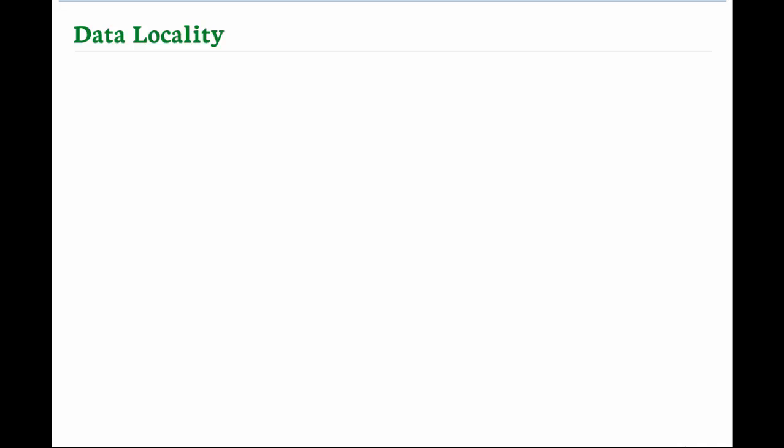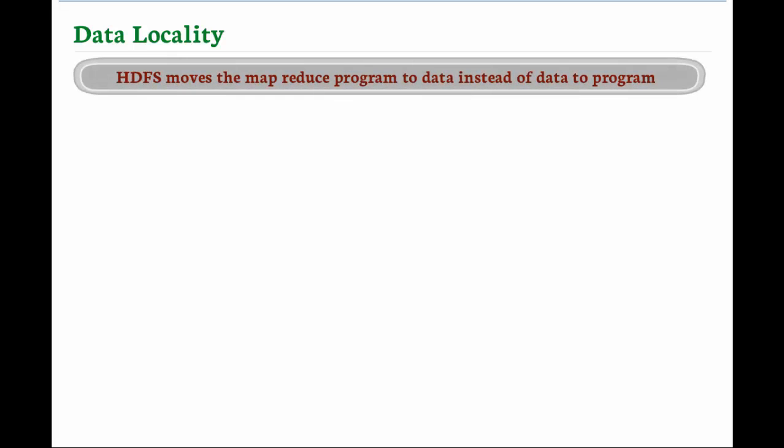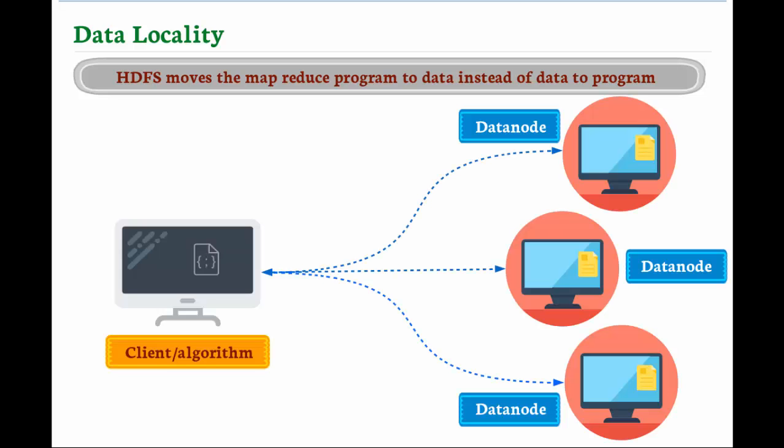Data locality: HDFS allows us to store and process huge amounts of data on the platform consisting of clusters of commodity hardware. Since the data is significantly large, HDFS moves the computation process, that is the MapReduce program, towards the data instead of pulling data out for computation. This minimizes network congestion and increases the overall throughput of the system.